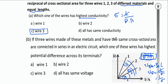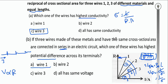If the three wires are connected in series (same cross-section area): in series, current is constant, so V ∝ R. Wire 1 has the highest slope (highest resistance), so wire 1 has the highest potential difference.